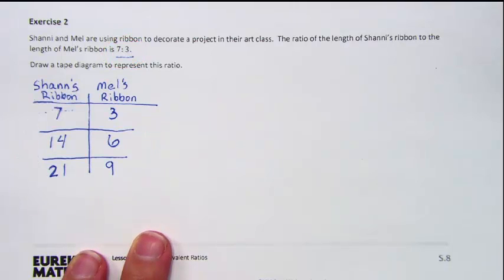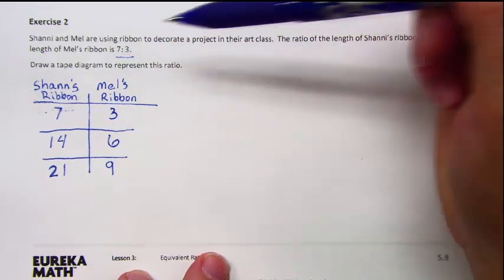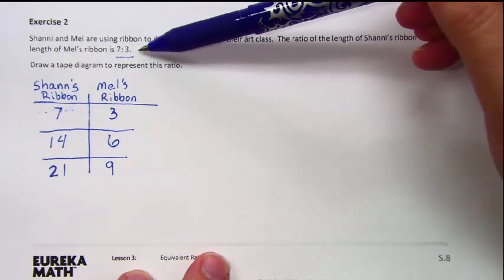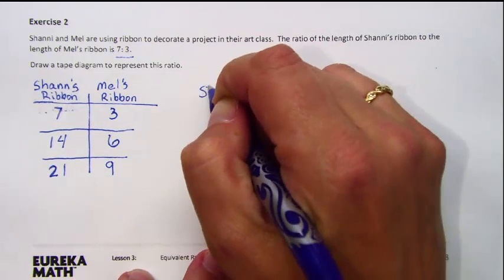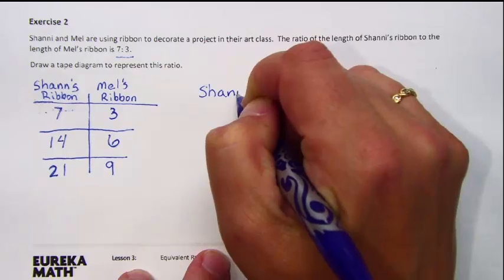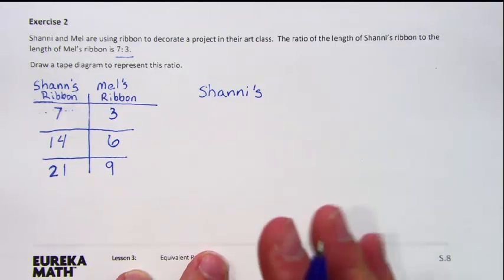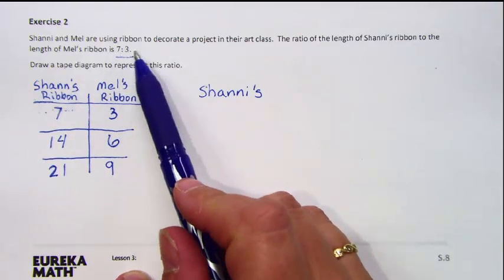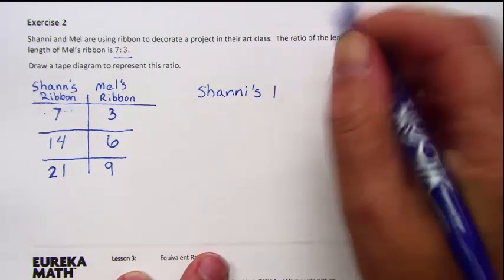We can also use a tape diagram to represent this information. In the original ratio, the length of Shawnee's ribbon to the length of Mel's ribbon is 7 to 3. We need to make sure we label when we do a tape diagram too. The first one is going to be Shawnee's ribbon. If we look at the ratio, it's 7 to 3 — Shawnee to Mel — so Shawnee's ribbon is 7 units.